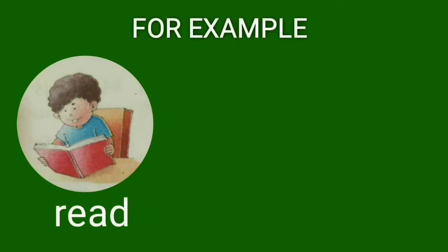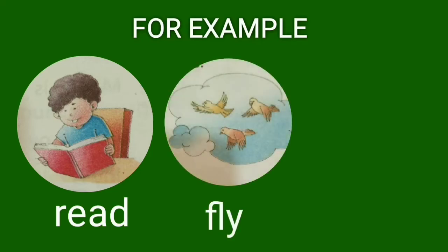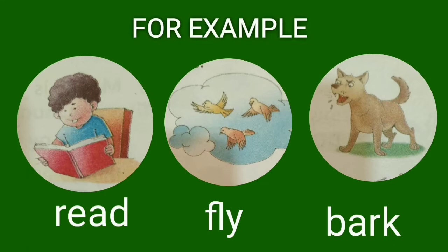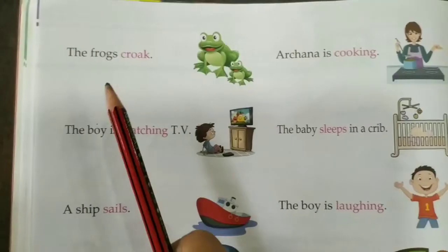So look at this picture. The boy reads a book. Birds fly. Dog barks. So all these words — read, fly, bark — these are all action words, also called doing words.